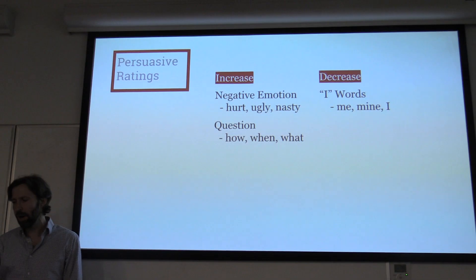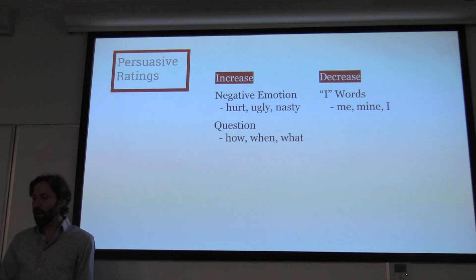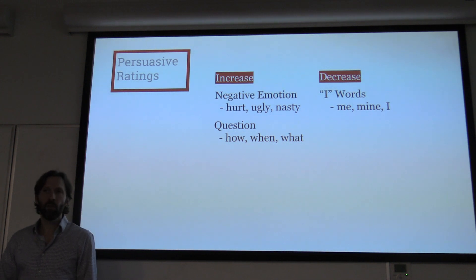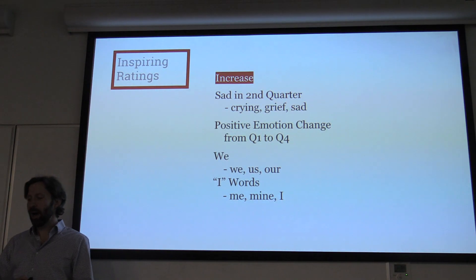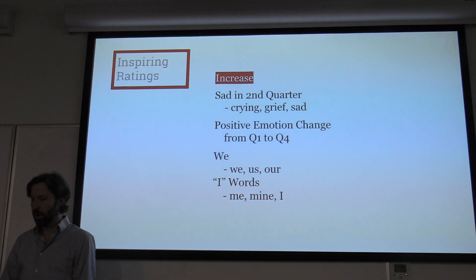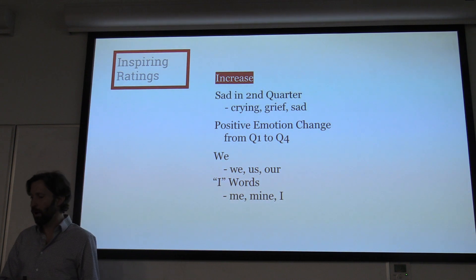The results are: for more persuasive ratings, there was increased negative emotion throughout the talk. For more persuasive ratings, there were also more question words like how, when, and what. For more persuasive ratings, there was a decreased use of the word I. For more inspiring ratings, there were more sad words in the second quarter — totally consistent with the hero's journey. The idea is that when going through challenges, words like crying, grief, and sad appeared more, and these were more inspiring.